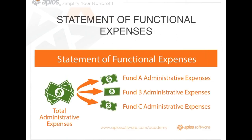The Statement of Functional Expenses breaks your total expenses up by fund and by different categories — basically showing administrative expenses and then those expenses broken out by fund. It correlates a lot to the Form 990 report, breaking things up into program services, management and general, and fundraising. It's another common nonprofit report, though less frequently seen in practice.